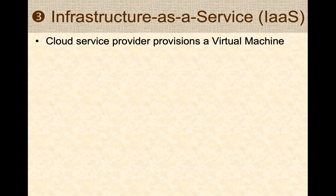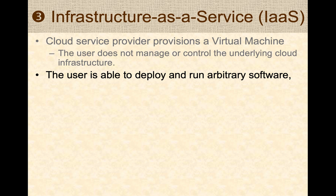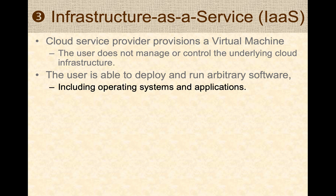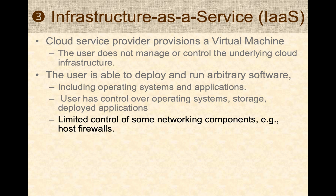Infrastructure as a Service, or IaaS, enables the most flexible and customizable infrastructure. The cloud service provider gives you a virtual machine. Keep in mind you do not control the underlying hardware — you only manage your virtual machine. Within it, you can deploy and run any software you want, including a custom operating system and custom applications. You have full control over the guest operating system, storage needs, and some control over networking components like firewalls.